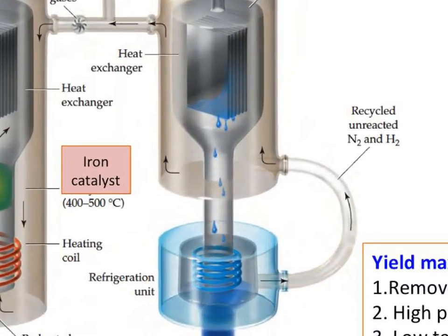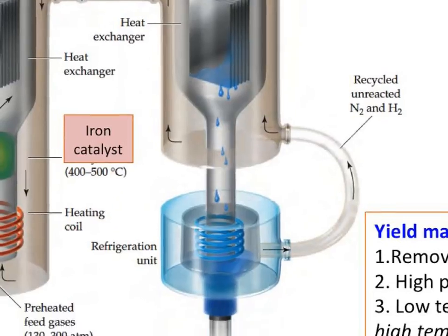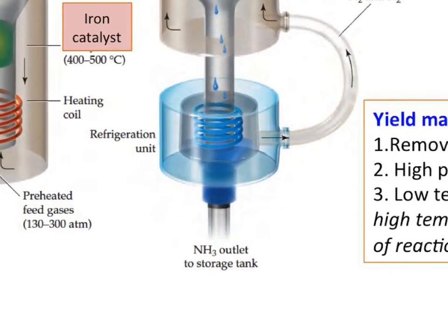Ammonia has a lower boiling point than nitrogen and hydrogen, so they actually condense it and end up with liquid ammonia — you can buy ammonia as a liquid in the supermarket. This is happening on an industrial scale; it's a really amazing thing.